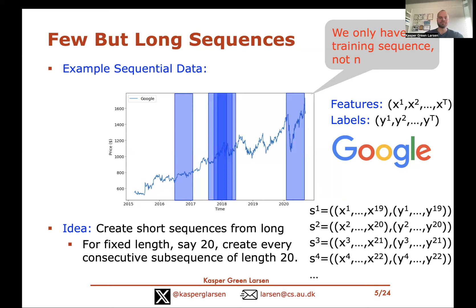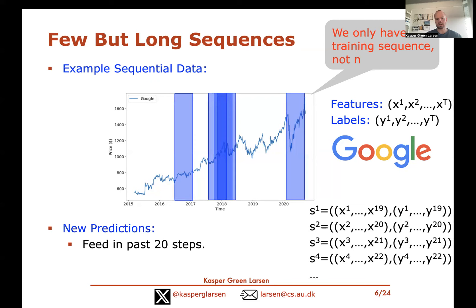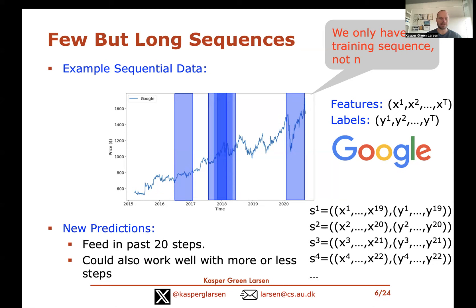This is a very standard trick you could consider using if you have a few long training sequences. Also, if you want to use the pre-trained model to make new predictions, you could feed in the past 20 steps matching the training sequence length, but you don't really have to. Because of the reuse of variables and parameters inside recurrent neural nets, your trained model could also work well with variable length sequences, even if trained on length-20 sequences.